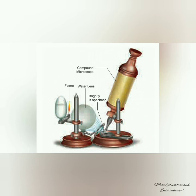One day, Robert Hooke made thin slices of cork and observed them under a compound microscope. He observed many identical hexagonal chambers and was surprised. After that, he observed many things like butterfly wings, bees' compound eyes, etc. Finally, he identified that there are different kinds of cells in different living organisms which have common characteristics.